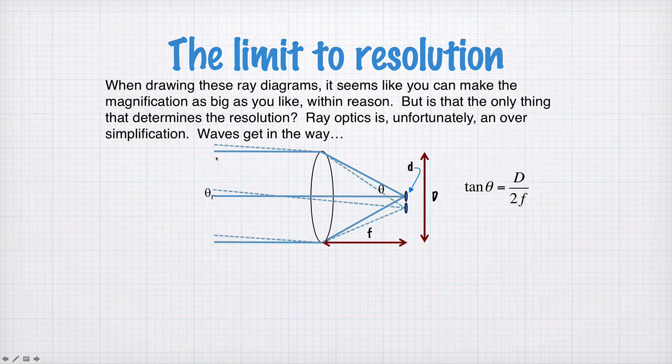And we imagine light coming in at some small angle, theta r, which is different to the optical axis. So we've got some light coming in at this angle, makes a spot with diameter d. And another bit of light coming in parallel, makes another spot with diameter d.